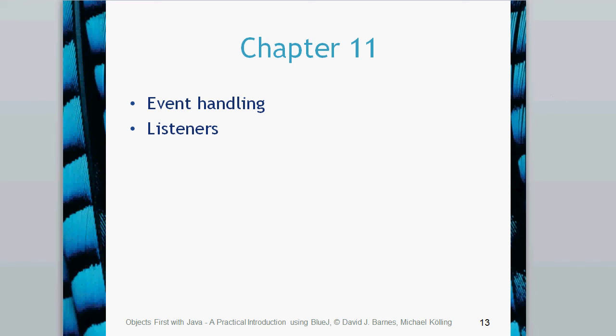Hello again. This is a chapter 11 video. We're looking at event handling and listeners. This video follows on from a previous video which looks at the image viewer class version 1. So you need to be clear on how to make JMenuItems, JLabels and JFrames as was discussed in that video before proceeding with this video.